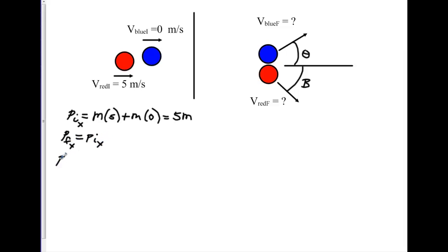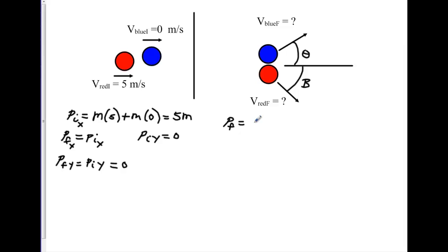We can also say that p final in the y must equal p initial in the y. Since there is no initial y momentum, p initial in the y equals zero. So we can state right now that the final momentum in the y direction also equals zero. The final momentum in the x direction is the mass of the blue ball times the velocity of the blue ball final times the cosine of theta.